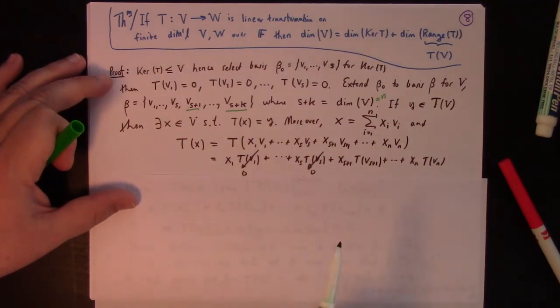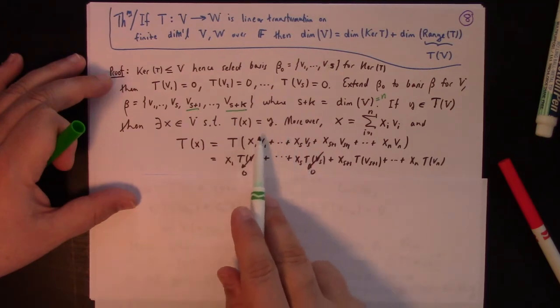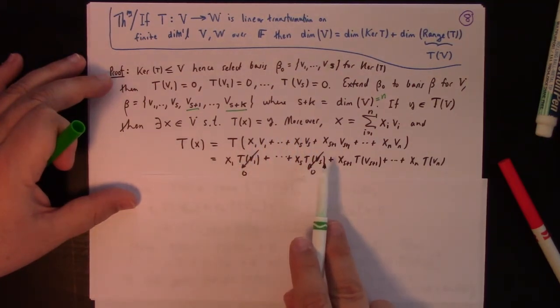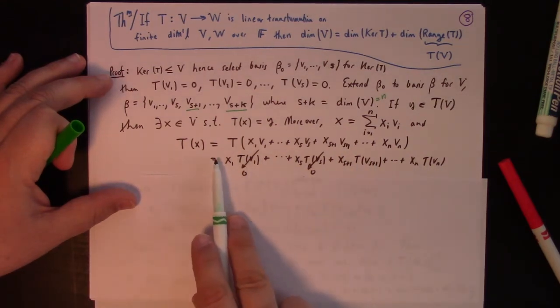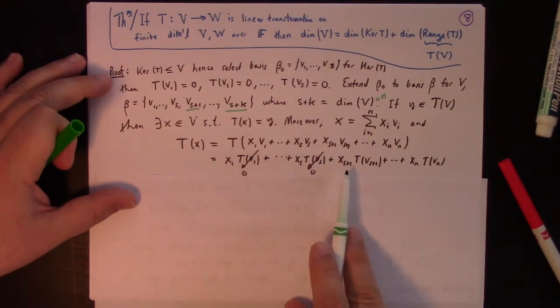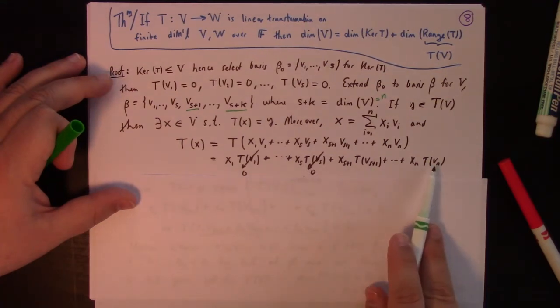And you notice what happens is that a lot of this dies off. Like, pretty much this whole first part's in the kernel. So it maps to 0, and you're just left with the images of the last piece. So this calculation already shows that the image is in the span of T of Vs plus 1 through T of Vn.